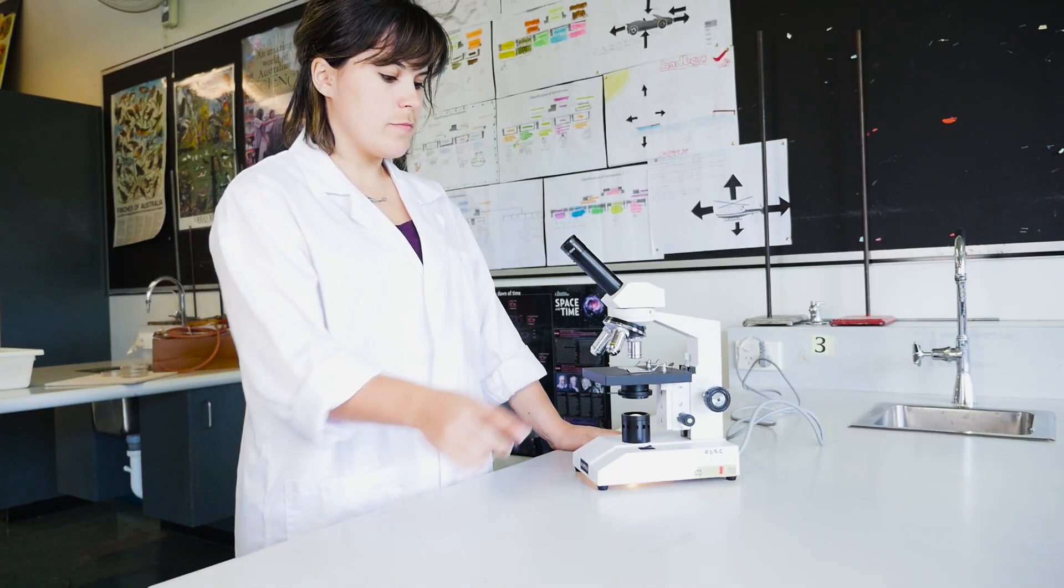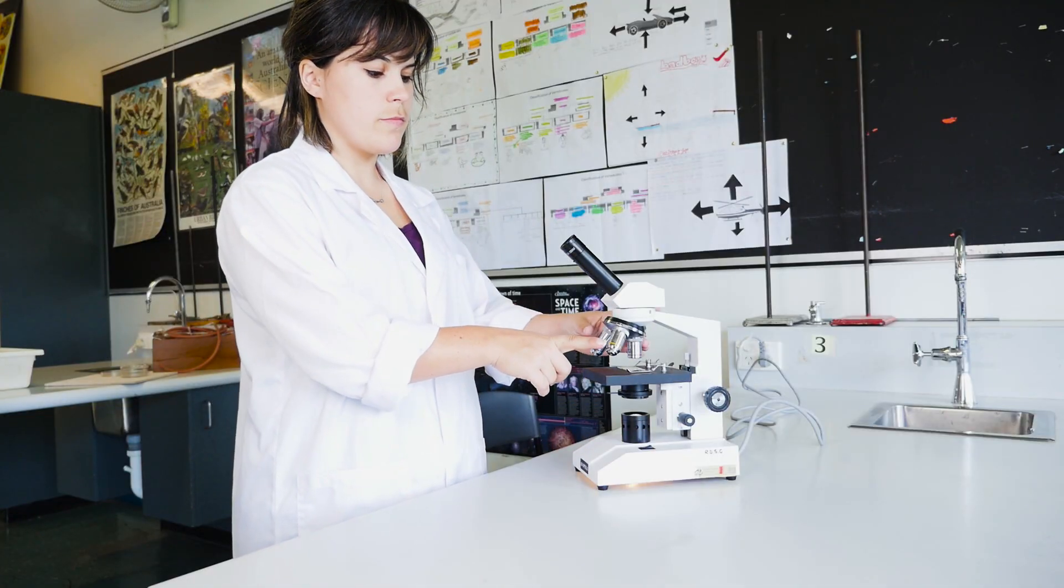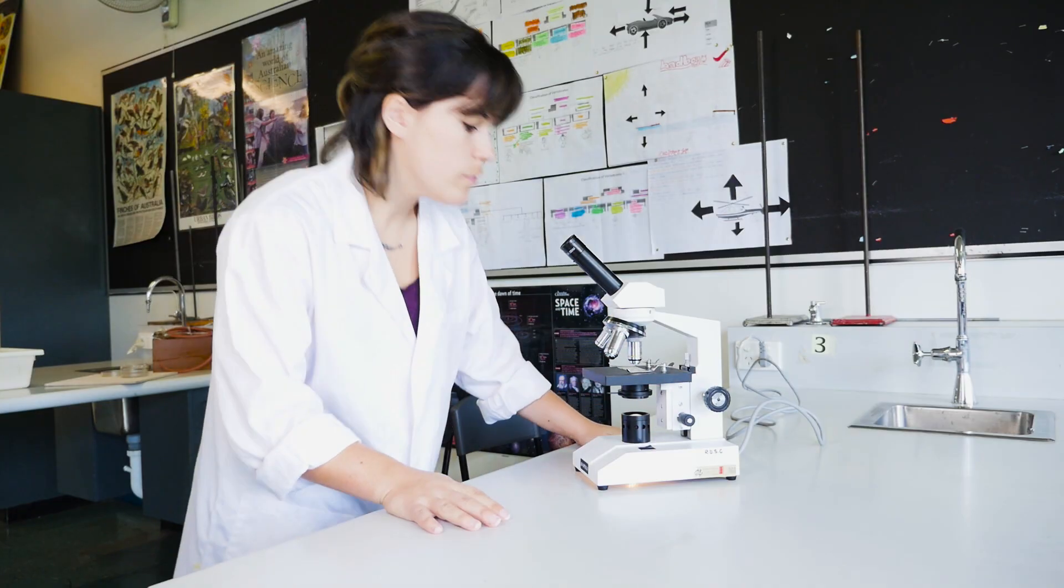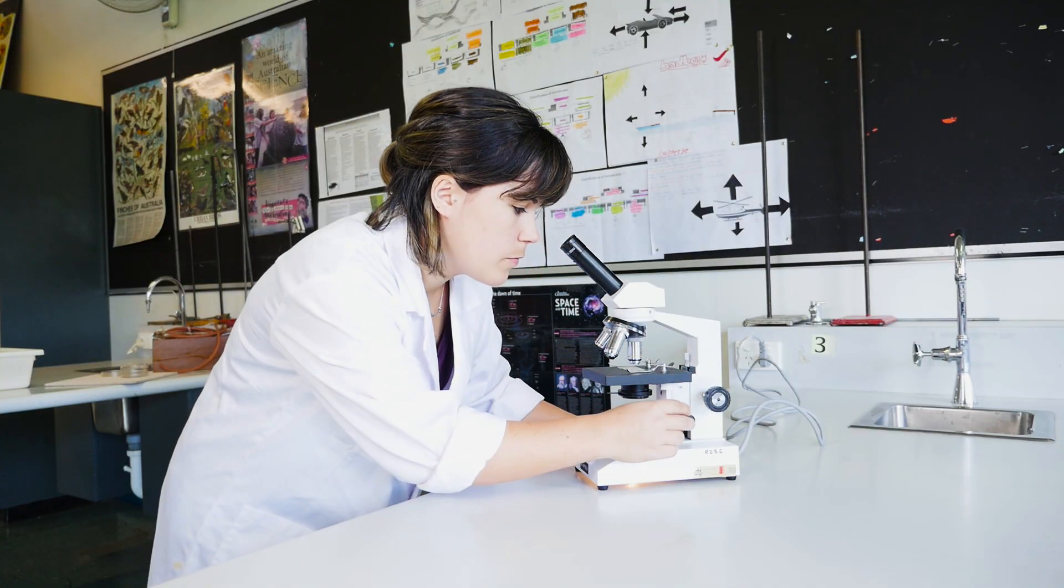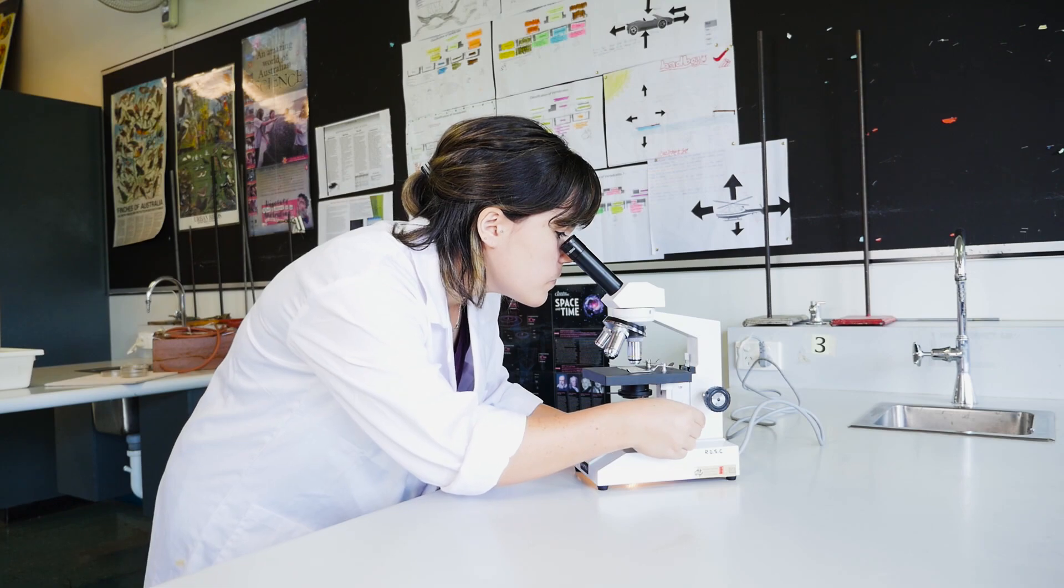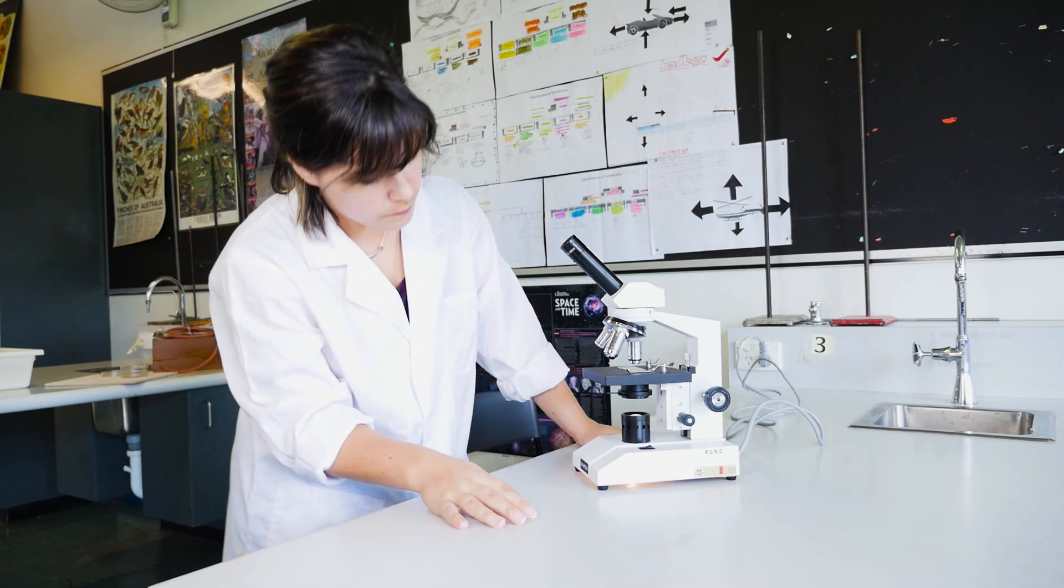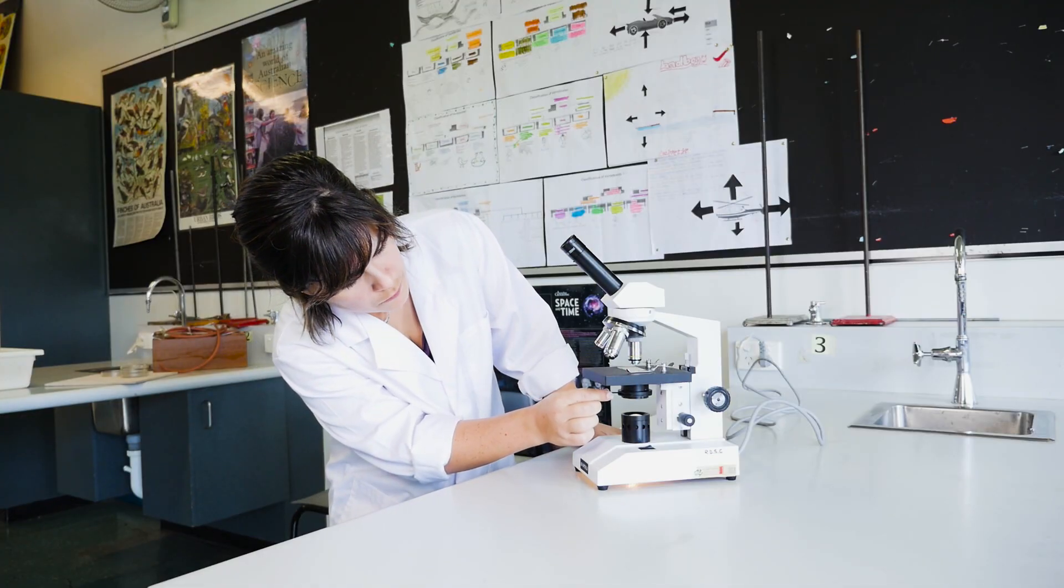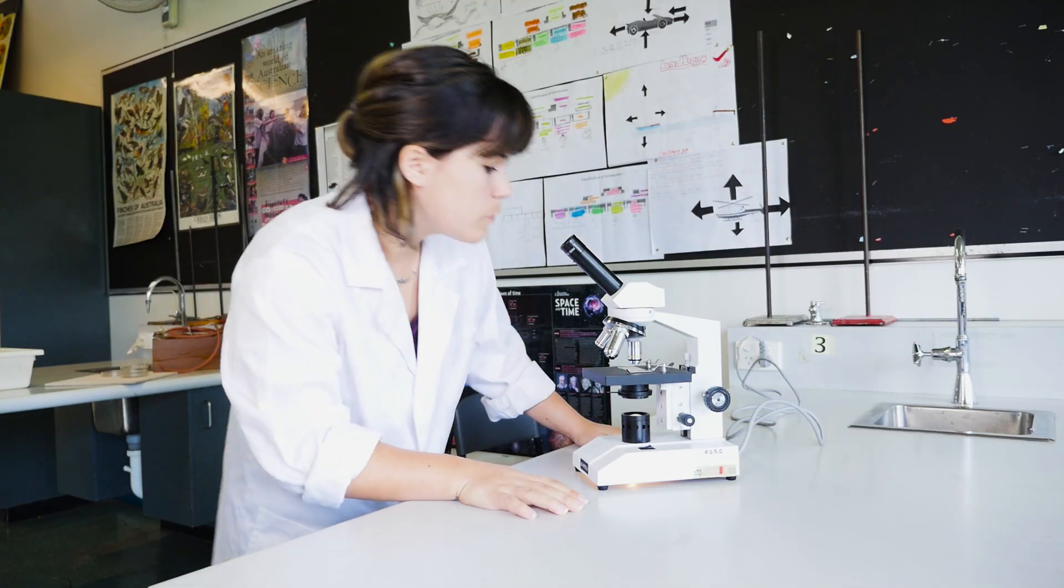Then follow the low to high rule and move to the next highest objective lens, 10. Your specimen should be nearly in focus and you should only need to adjust with the fine focus knob. You might also notice that the image gets darker. If it does, you can open the diaphragm to let a bit more light through.